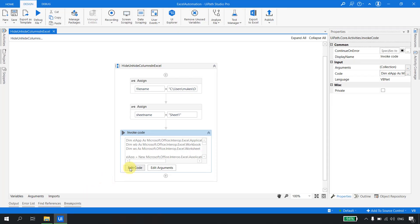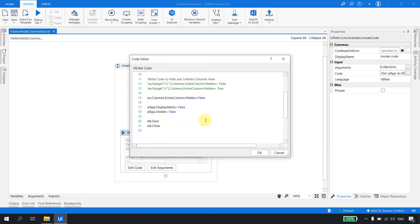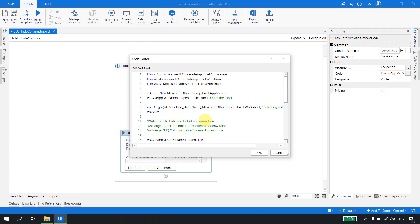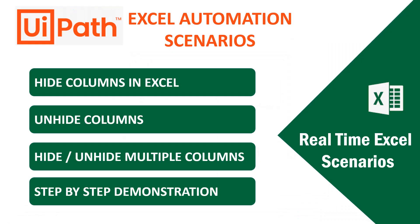This completes the demonstration for both hiding and unhiding columns in UiPath Studio. Quick recap: we saw how to hide columns, how to unhide columns, and how to hide and unhide multiple columns — all using the invoke code activity with a step-by-step demo. I'll wrap up here. Thank you for watching. If you like this video, please subscribe to the channel. Happy automation — see you soon!